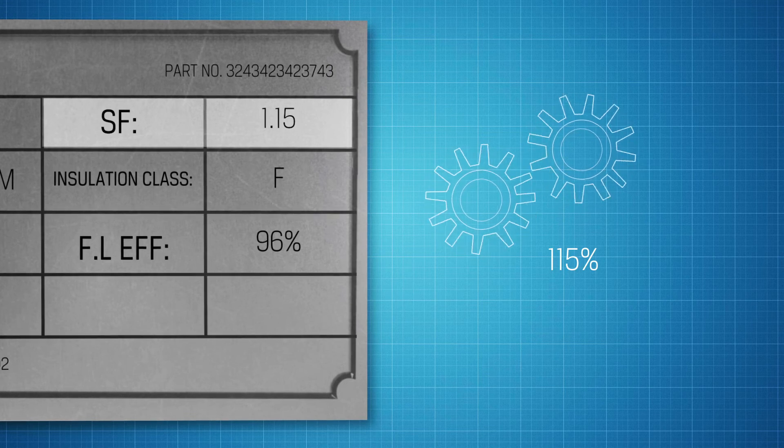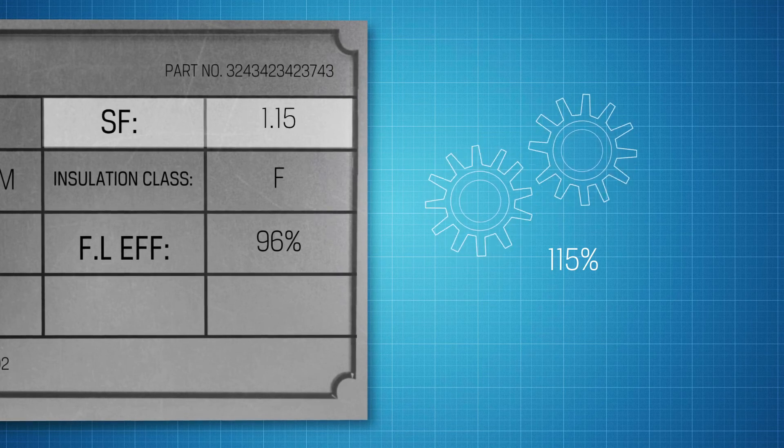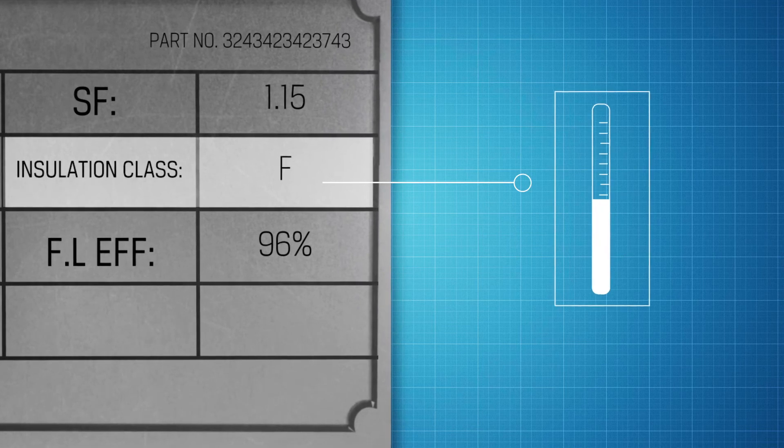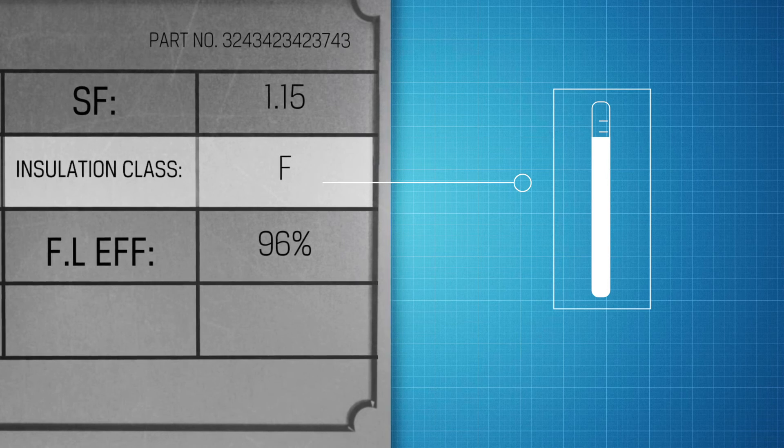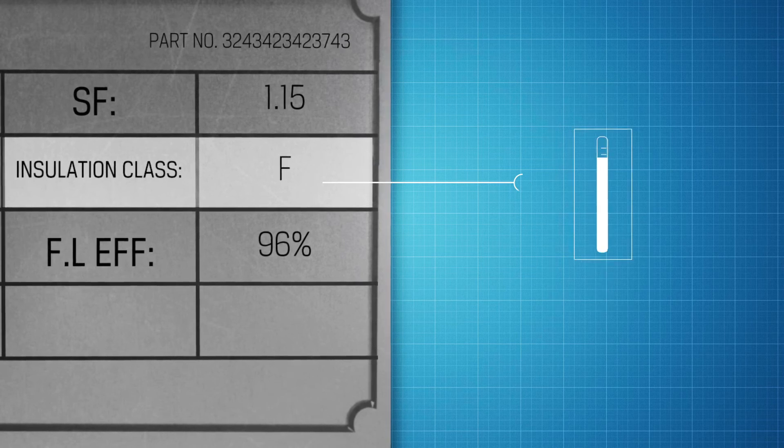Just remember that going above the rated output can degrade life expectancy. The insulation class indicates the ambient temperature range the motor can handle. A higher letter designation represents a higher temperature allowed or a longer life expectancy at a lower temperature.